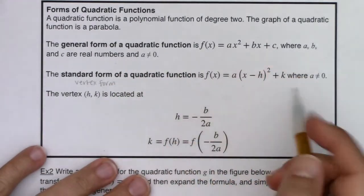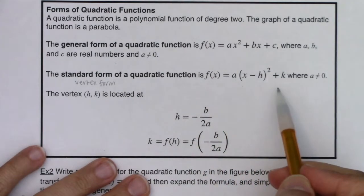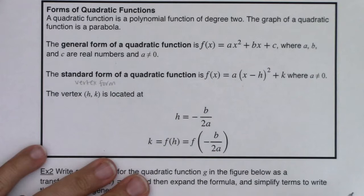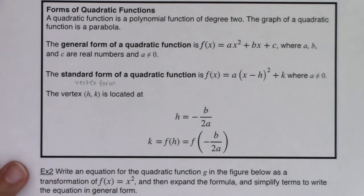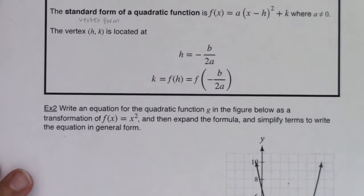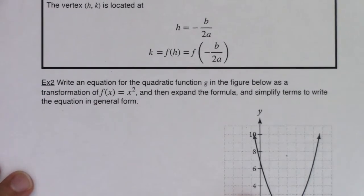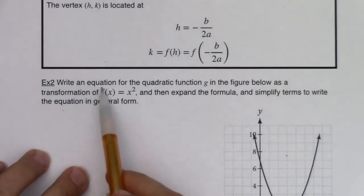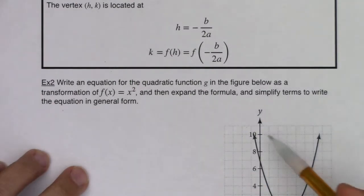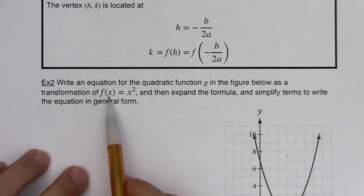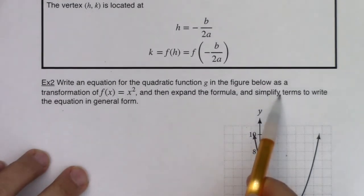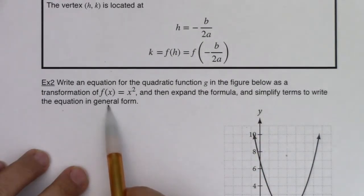So with that, keeping this in mind, keeping general form and vertex form in mind, we're going to revisit that quadratic, that parabola that we had in example 1. But now we're going to figure out what its equation is. This says, write an equation for the quadratic function g in the figure below as a transformation of f(x), your toolkit parabola function, and then expand the formula and simplify the terms to write the equation in general form.